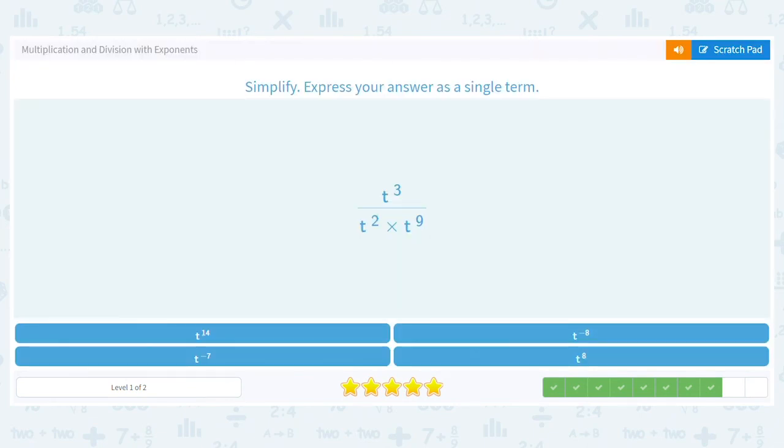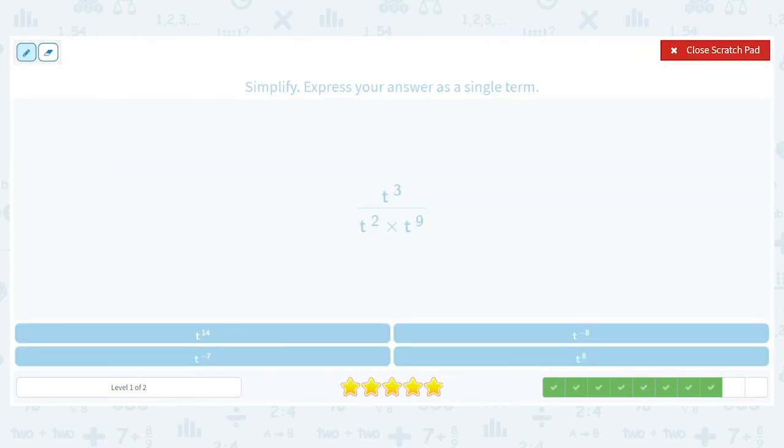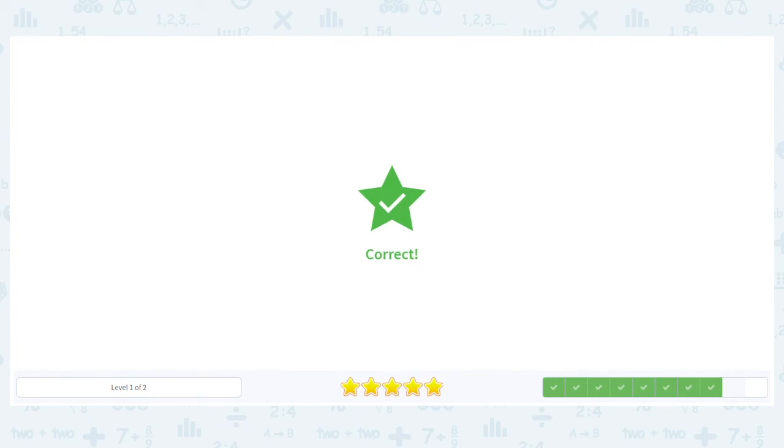How about this? Well, we've got three minus two minus nine. So this will give us one minus nine or negative eight. So we should be looking for t to the negative eight. Great.